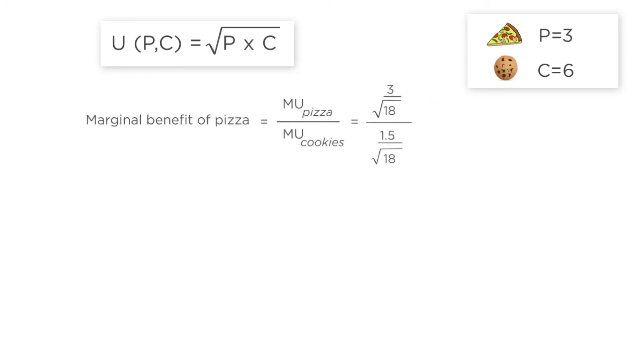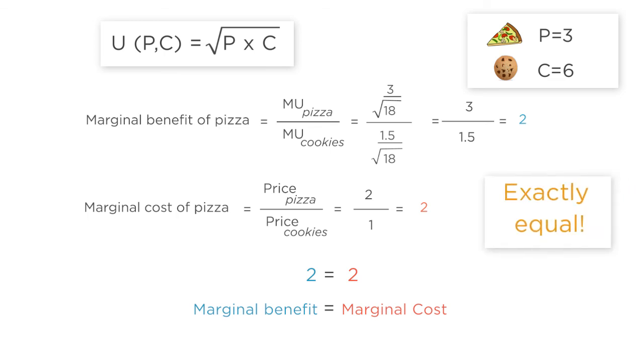So the marginal benefit of pizza is 3 divided by 1.5 or 2. This is exactly equal to the marginal cost of pizza we computed earlier using the price ratio. As a result, our indifference curve is tangent to the budget line.